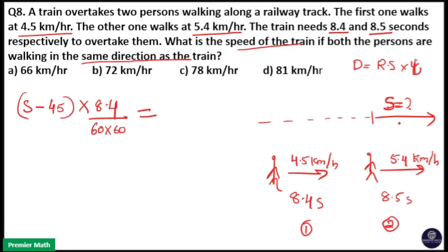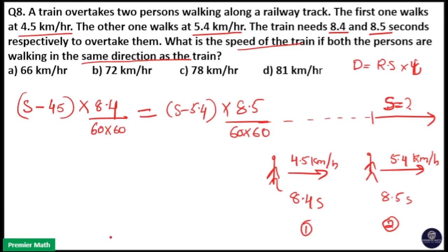Next is the distance covered while overtaking the second person: S minus 5.4, multiplied by the time taken to overtake — 8.5 seconds — converted to hours by dividing by 3600. Since both distances are equal, I will equate and then subtract the first equation from the second.